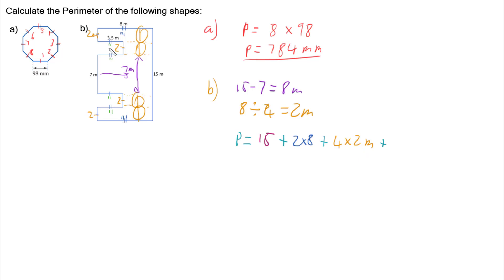well not quite finally, I add 4 lots of 3.5 metres. And now lastly, the last side we haven't taken care of is this 7 metres here. So our perimeter is 15 plus 2 times 8 plus 4 times 2 plus 4 times 3.5 plus 7. And if we work that out, that gives us a perimeter of 60 metres.